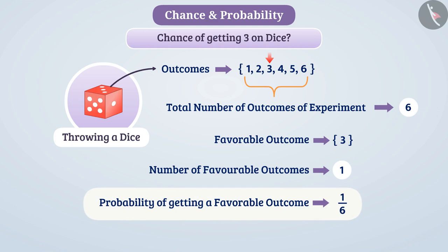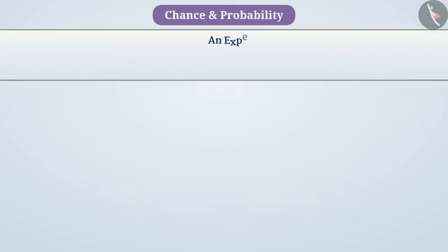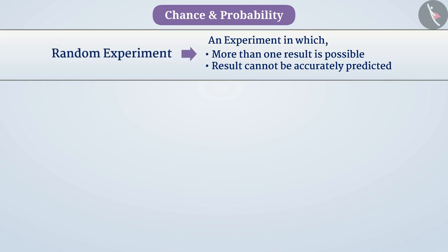To know the probability better, let's understand some of the terms used in its context. An experiment in which more than one result is possible and the result cannot be accurately predicted is called a random experiment.